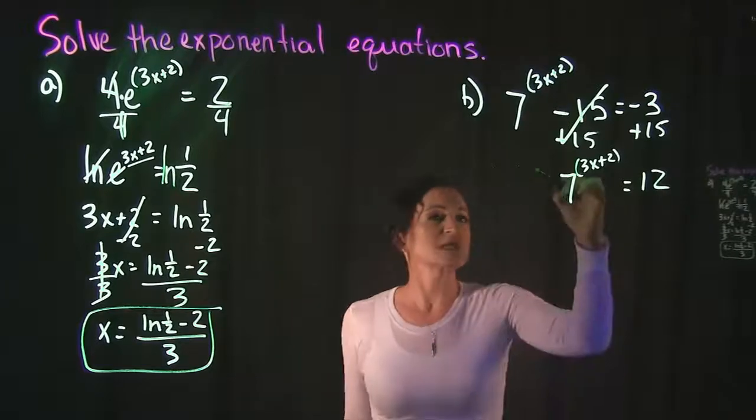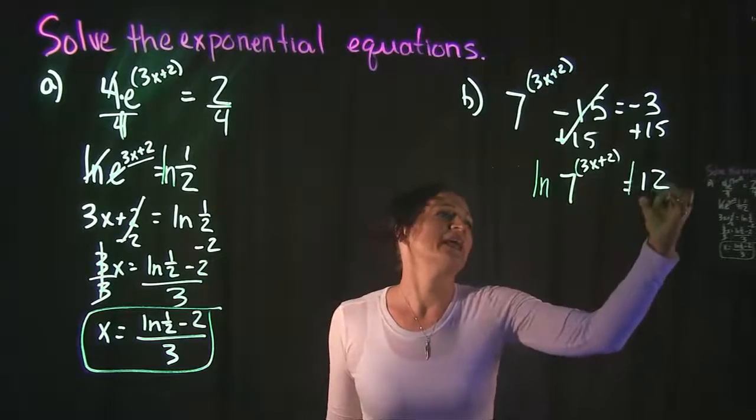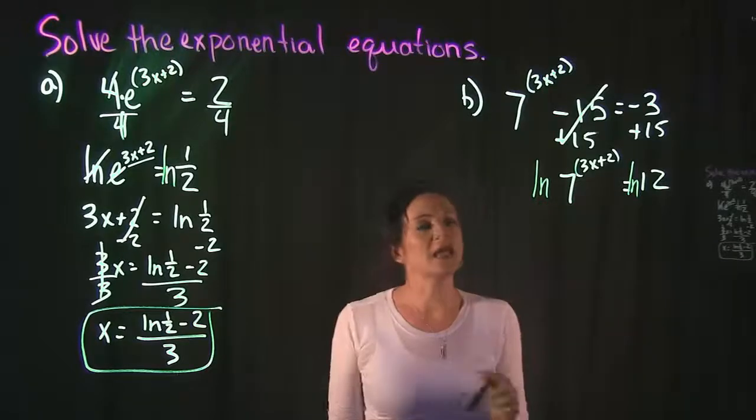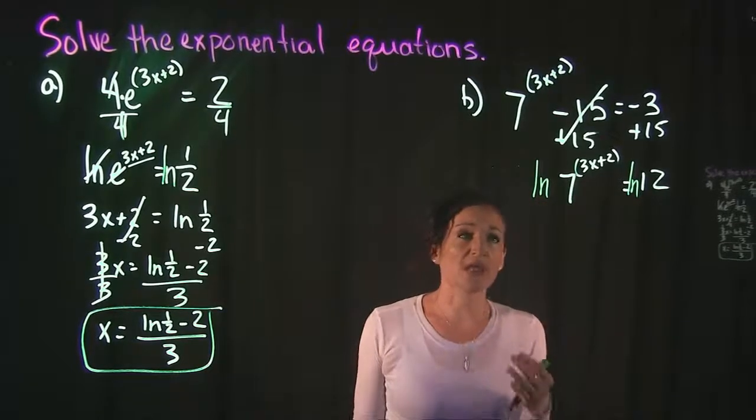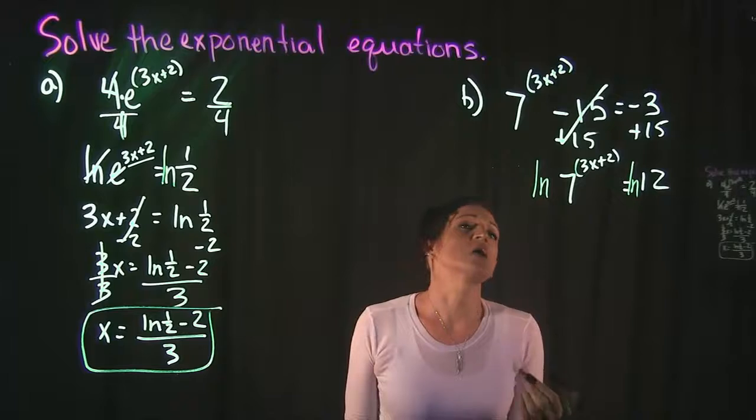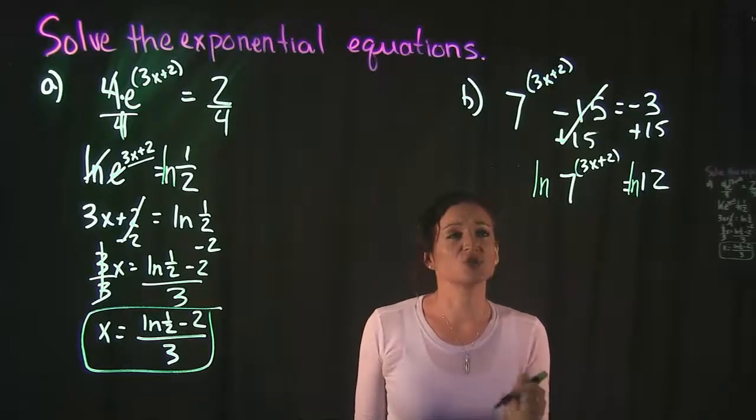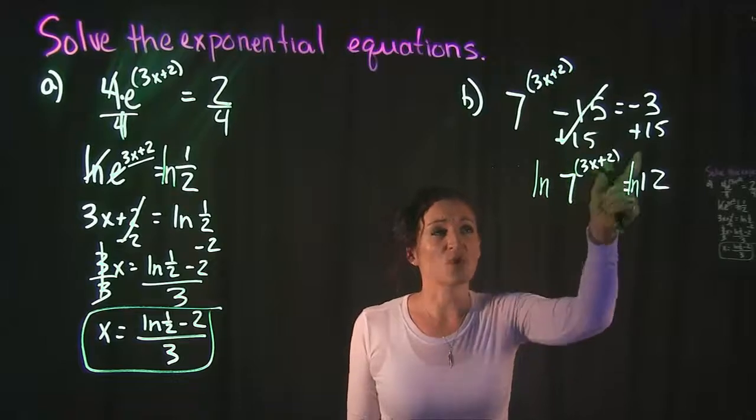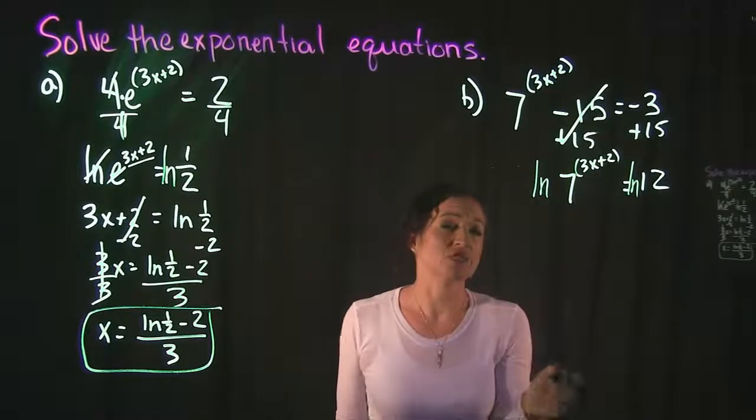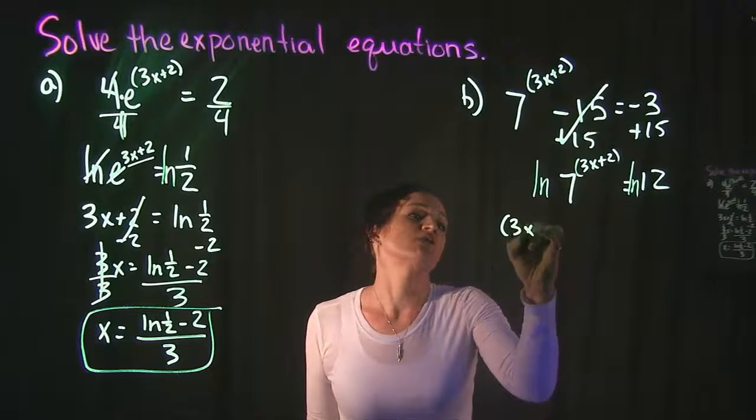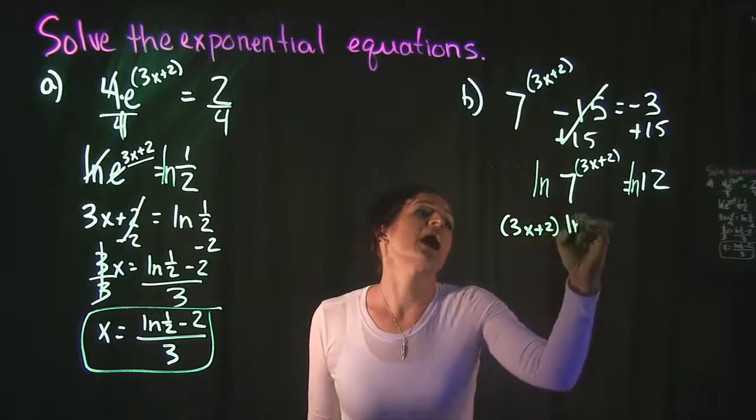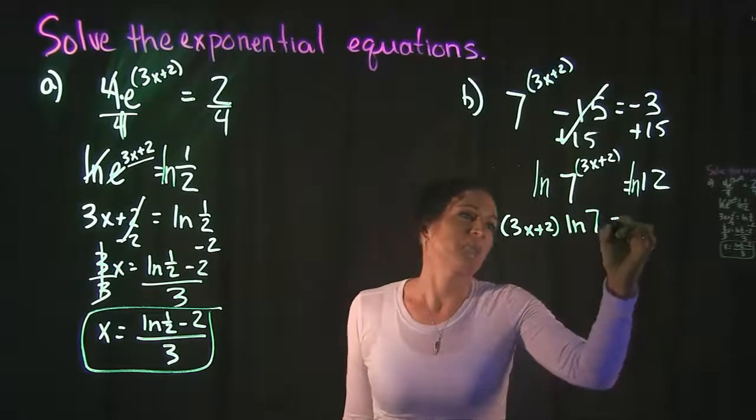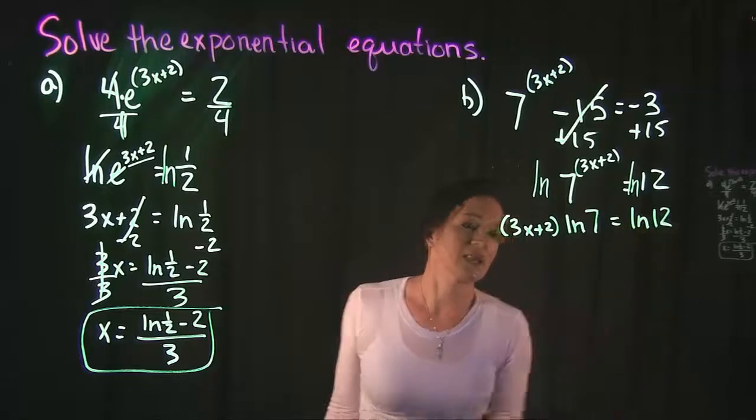What we're going to do next is take the ln of both sides. Now we're taking the ln of a number raised to a power. So this actually allows us to take the power and bring it down in front as a coefficient. So we're going to have (3x + 2) ln 7 = ln 12.